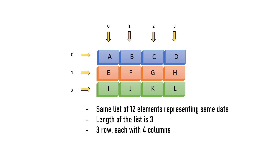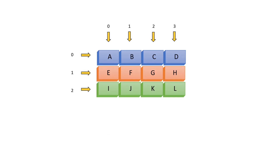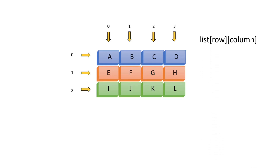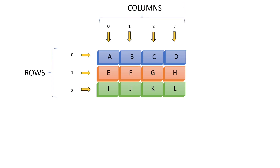Our outer list in this example has 3 rows and 4 columns. The new structure still has the same data as the previous one-dimensional list, but now we have morphed it into a two-dimensional list. The key takeaway is that we now need two indexes to access every piece of data. The first index identifies the row, which is the inner list, and the second index identifies the column, which is the element within that inner list. For example, to access element D we provide 0 and 3 as row and column, and to access element K we provide 2 and 2.